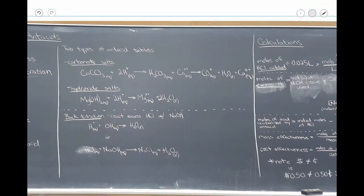There are two types of antacid tablets. There's carbonate salts here and hydroxide salts here. The carbonate, in the, this is the net ionic equation, the carbonate salts react with two hydrogens from the acid. That makes this H2CO3, this carbonic acid, which then devolves into carbon dioxide, which is a gas, and H2O, which is a liquid and stays. And then calcium is just aqueous the whole time.